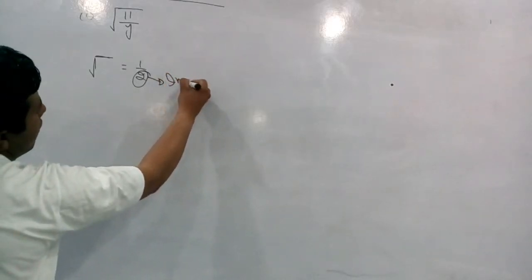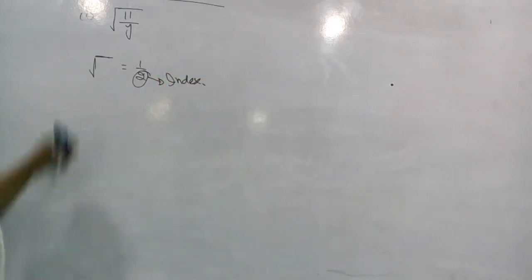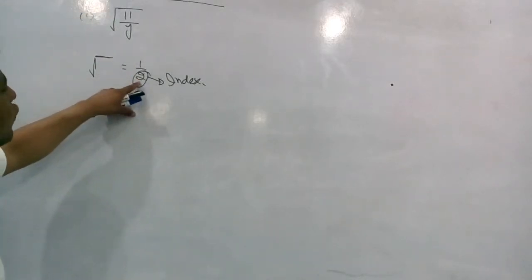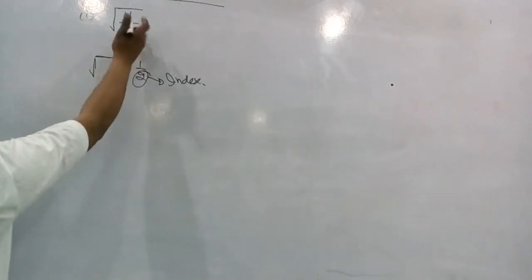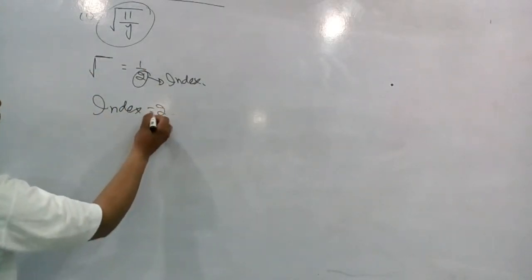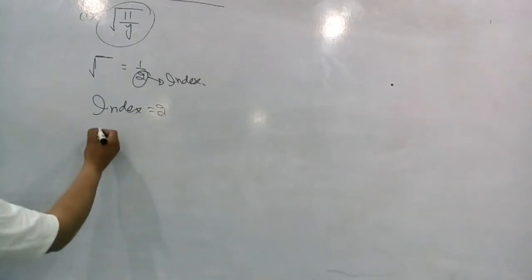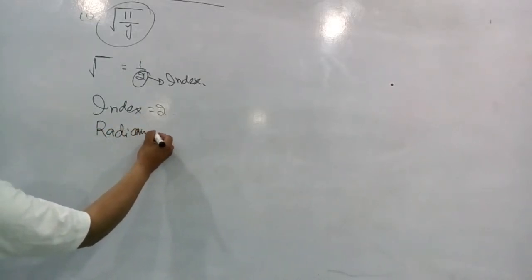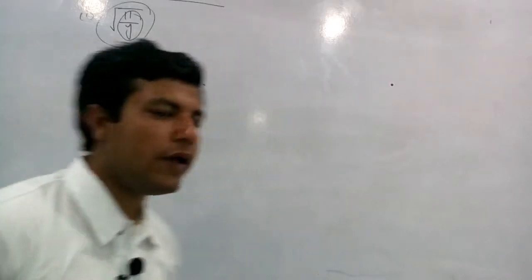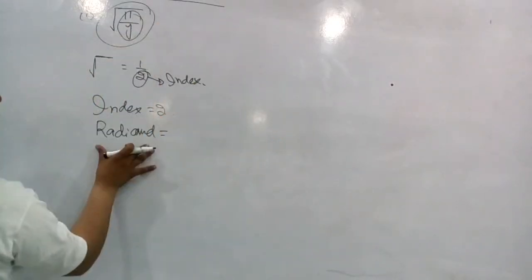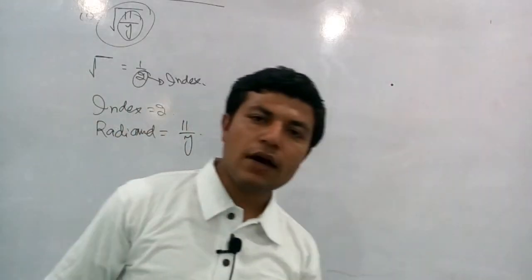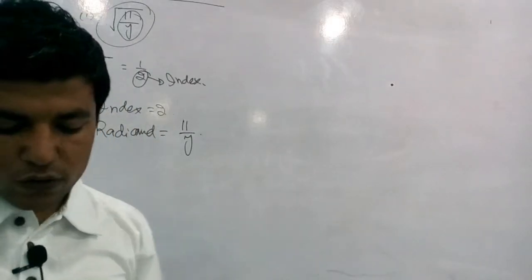Index ہمارے پاس 2 ہے کیونکہ یہاں square root ہے۔ Radical کیا ہوتا ہے - radical ہمارے پاس وہ ہوتا ہے جو root کے اندر ہوتا ہے، جس چیز کا آپ نے root لیا ہوا ہے۔ تو radical ہمارے پاس ہے 11/y. یہ اس question کا index اور radical ہو گیا۔